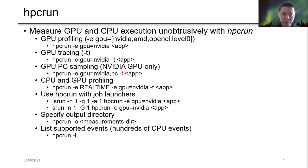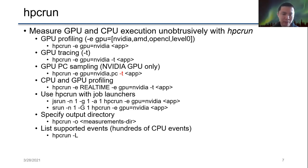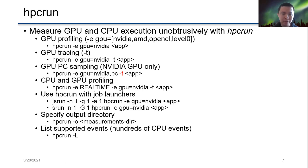To use HPCRun with job launchers like jsrun or srun, pass the job launcher command as a prefix to HPCRun. By default, HPCToolkit dumps measurement data to a directory named HPCToolkit-applicationname-measurement. If you want to specify your own output directory, use the -o option. In addition to GPU events, HPCToolkit supports hundreds of CPU events, including PAPI and PERF events. To look up all supported events, use HPCRun -L (capitalized).